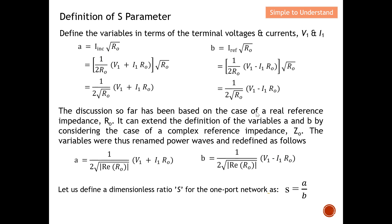The discussion so far has been based on a real reference impedance R0. We can extend the definition of variables 'a' and 'b' by considering a complex reference impedance Z0. In this case, the variables are renamed as power waves and redefined accordingly. The equation form remains the same, but we now use the real part of Z0. If you recall, the S-parameter is simply 'b' over 'a'.